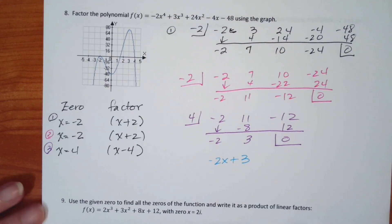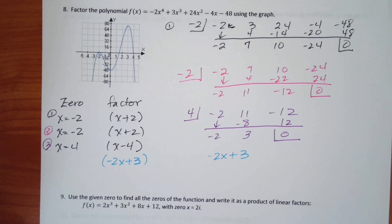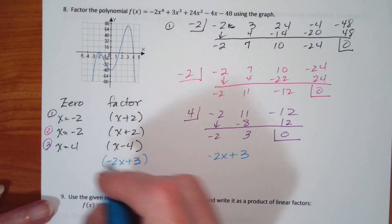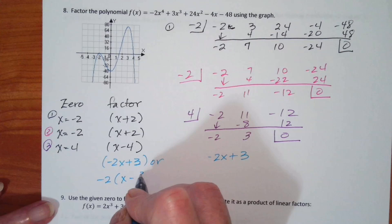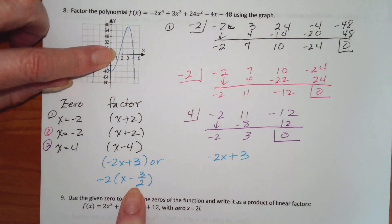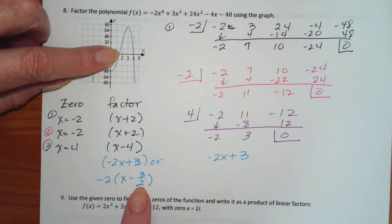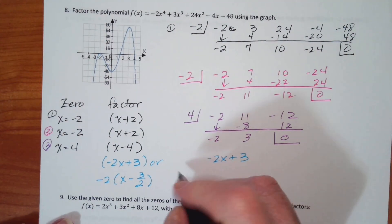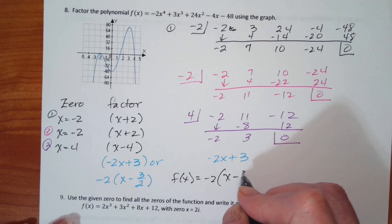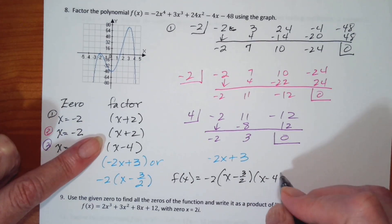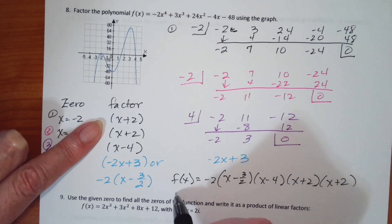So I now have another factor of negative 2x plus 3. If it says completely factor, I can write this as negative 2 times x minus 3 halves. That also supports what's on the graph because it looks like the solution is between 1 and 2, so 3 halves is a reasonable solution. My factored form is f of x equals negative 2 times x minus 3 halves times x minus 4 times x plus 2 times x plus 2, or x plus 2 squared.